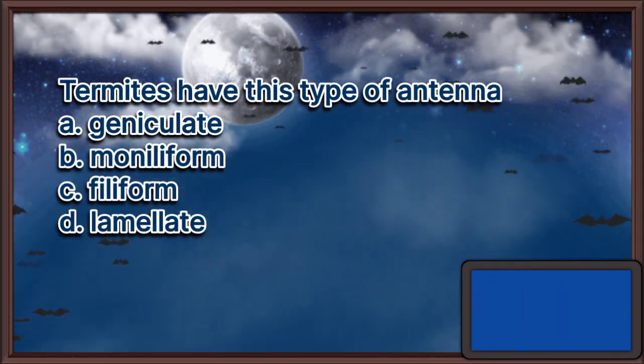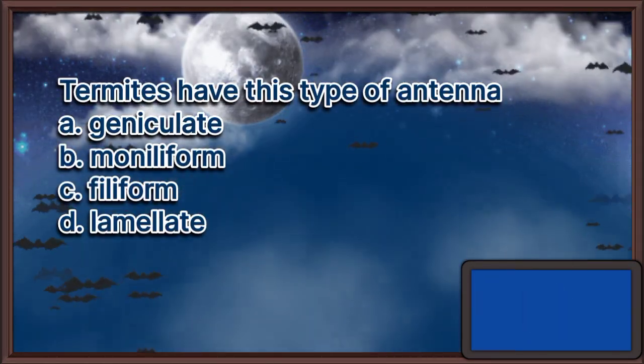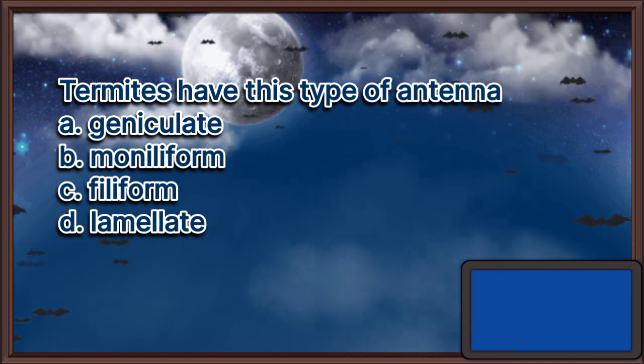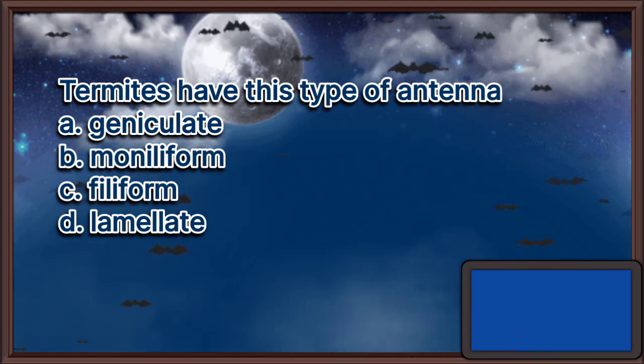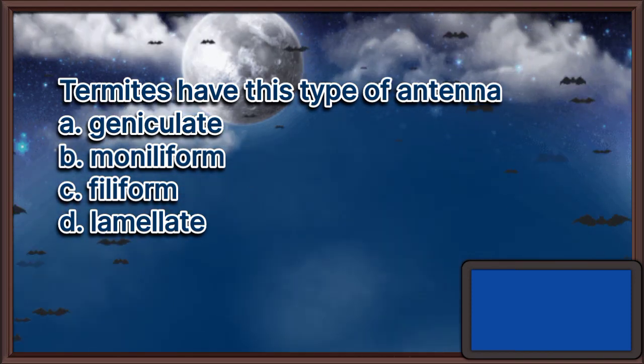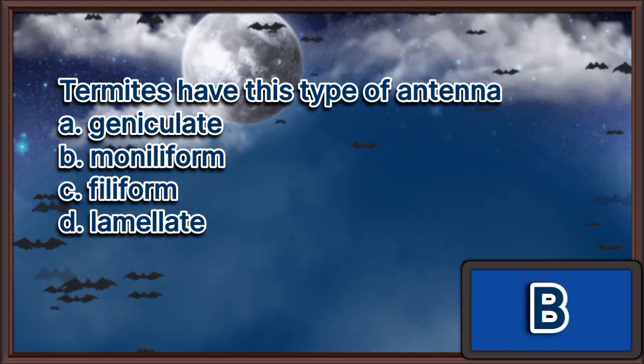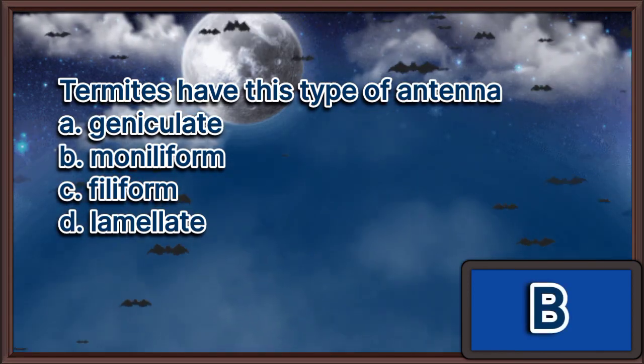Termites have this type of antenna. A. Geniculate. B. Moniliform. C. Filiform. D. Lamellate. The answer is letter B.